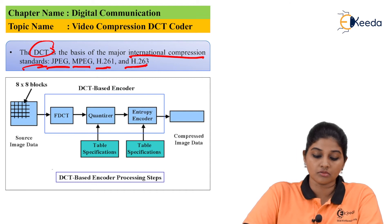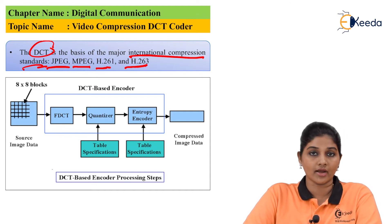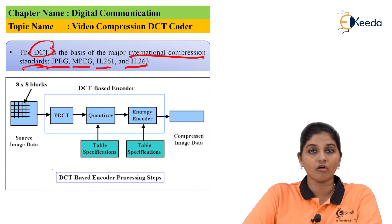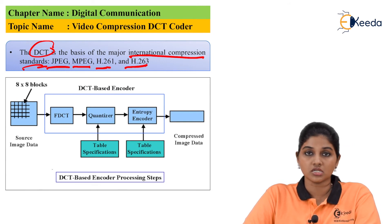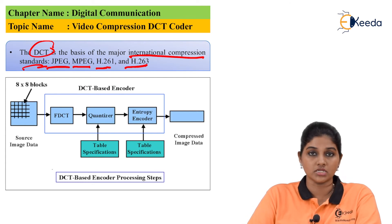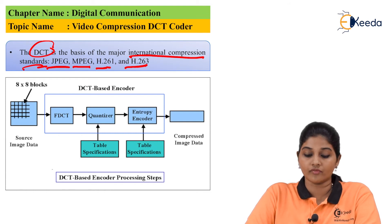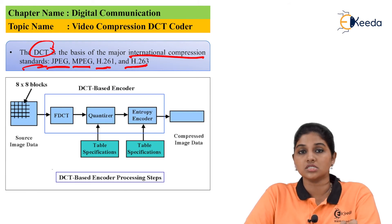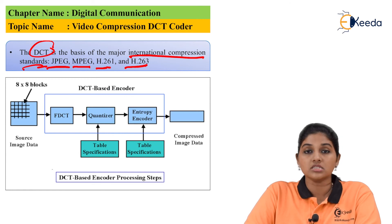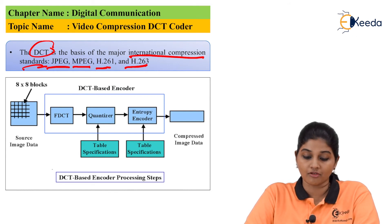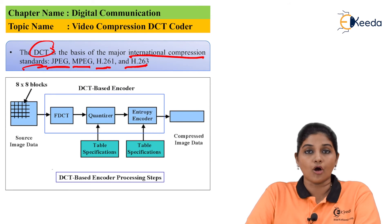The major international compression standards based on DCT include JPEG, MPEG, H.261, and H.263. Looking at the block diagram of DCT: the source image data is first divided into 8×8 blocks. These blocks are then given to the DCT encoder, which consists of three steps — the signal analysis block (represented as forward DCT), the quantization block, and the entropy encoder. The compressed image is available at the output.